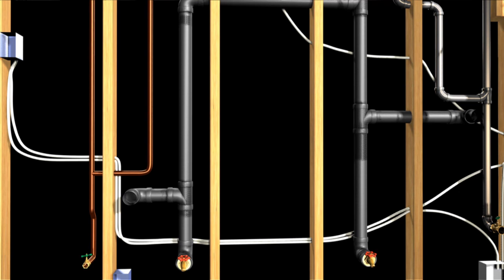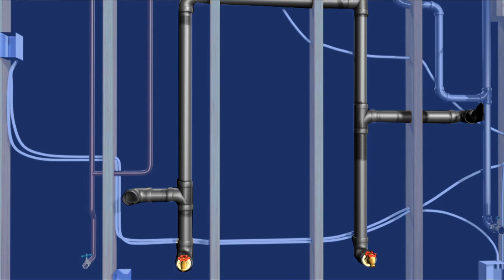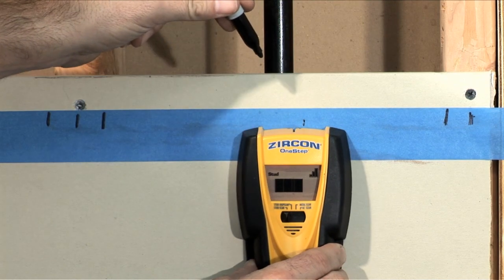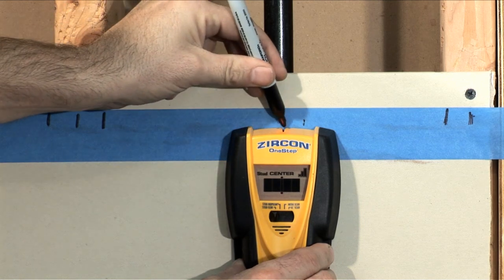In our last video, mapping a wall, we discovered a wall can hide objects like pipes and conduit, which a stud finder will detect along with the studs. Here are four ways to check to see if what you found is actually a stud.